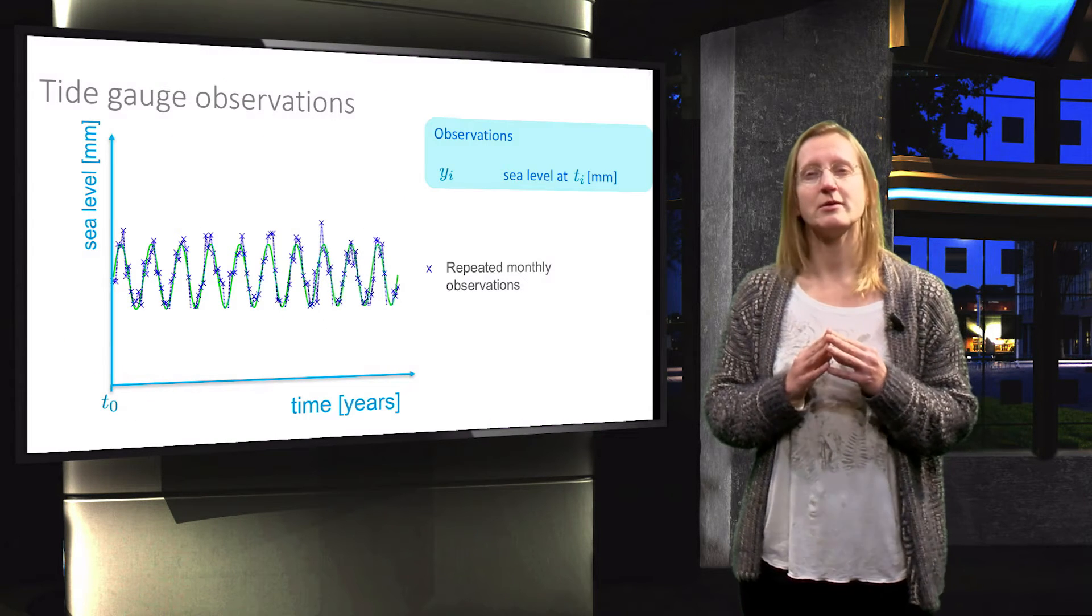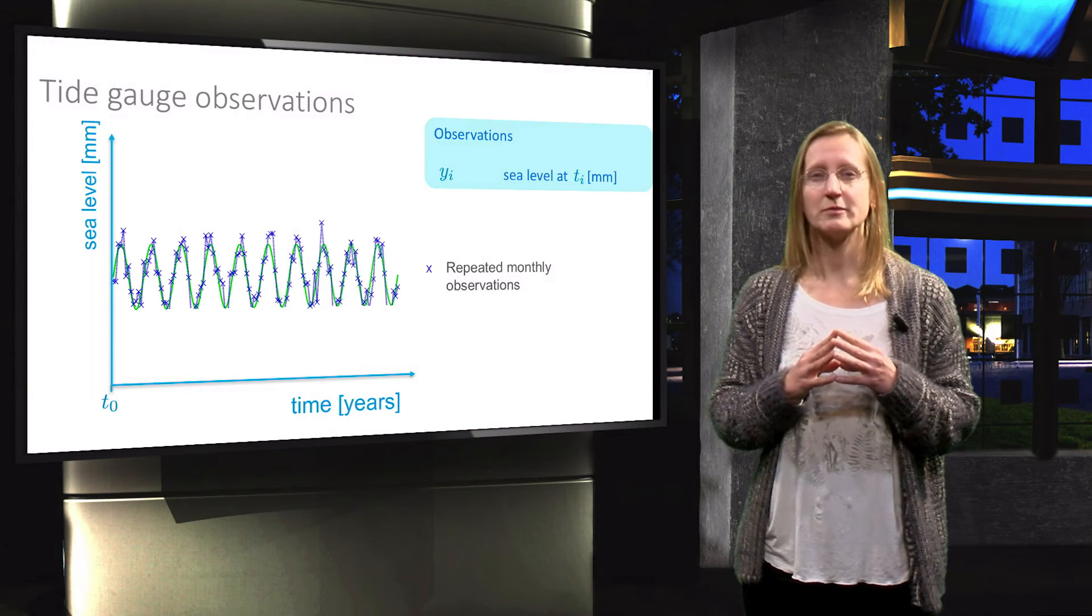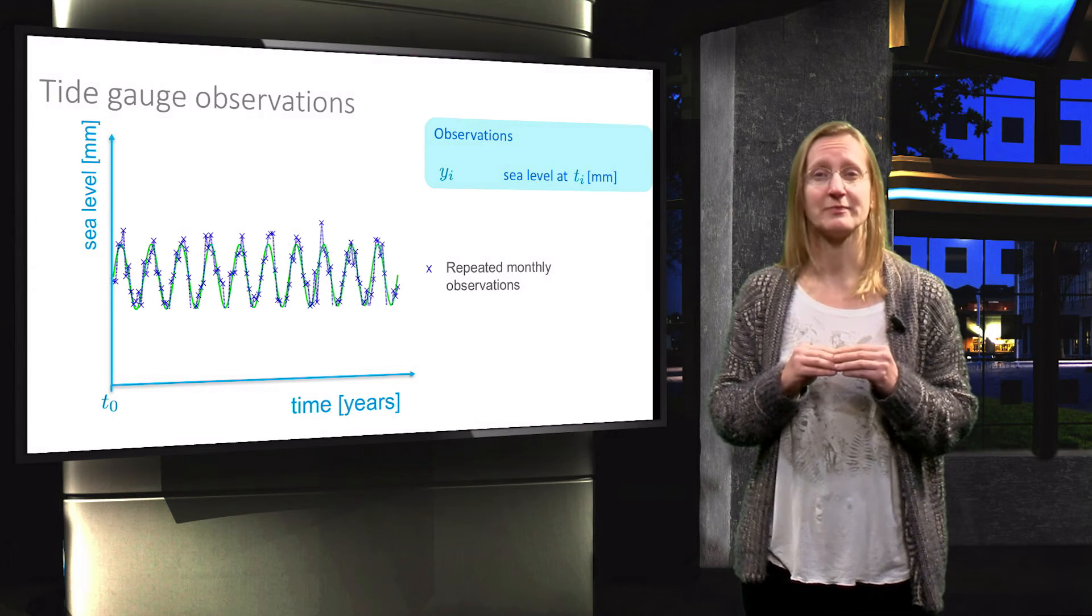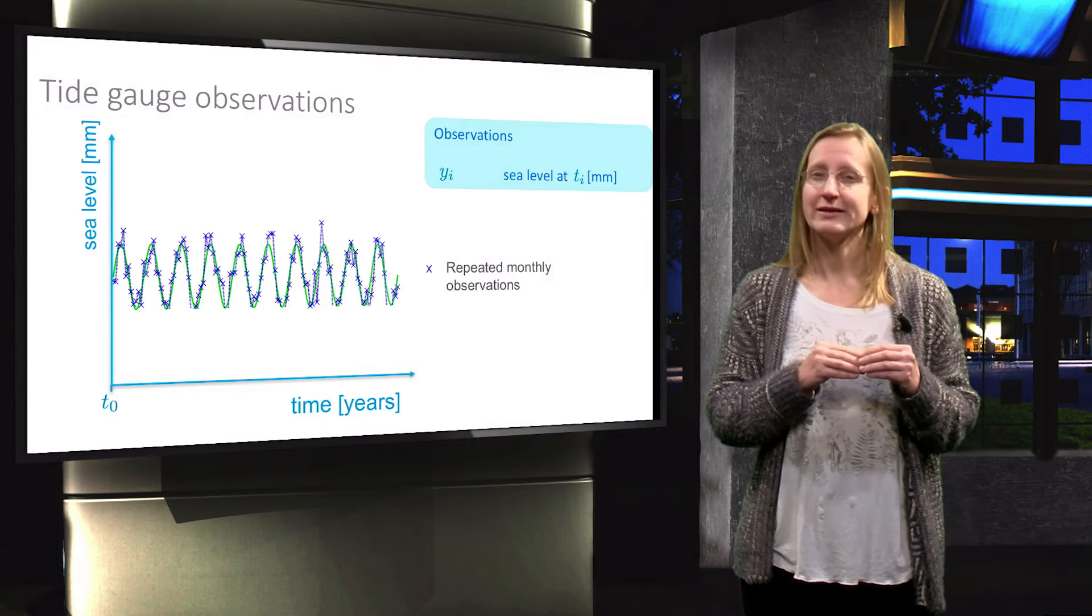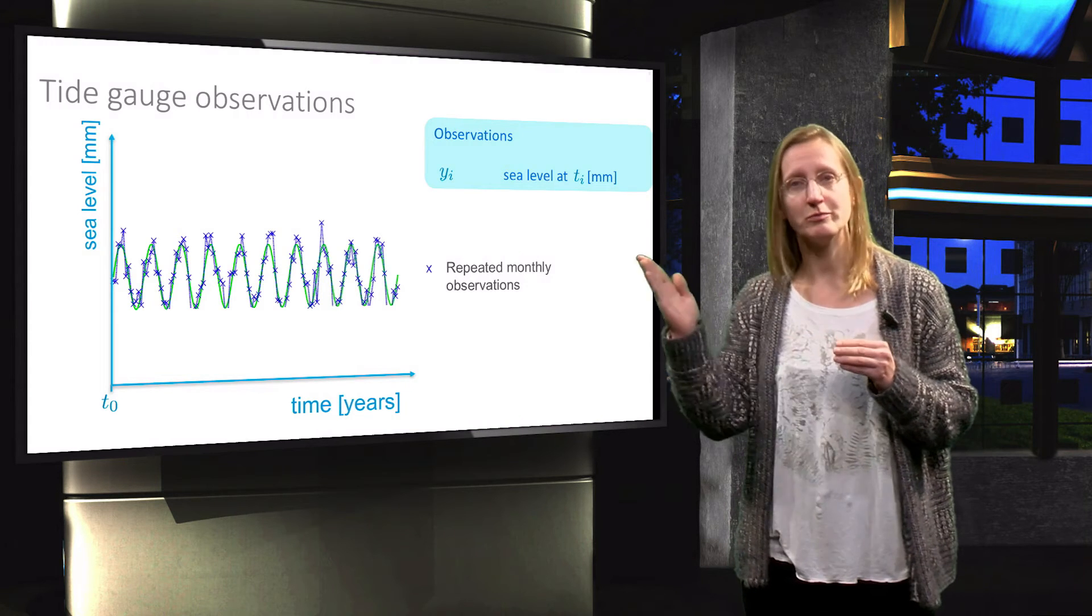As a second example, assume now we would again have 10 years of monthly tide gauge observations, but now in the absence of a linear trend in sea level rise. Here we are only interested in this annual signal, modelled by a sine as shown by the green line.